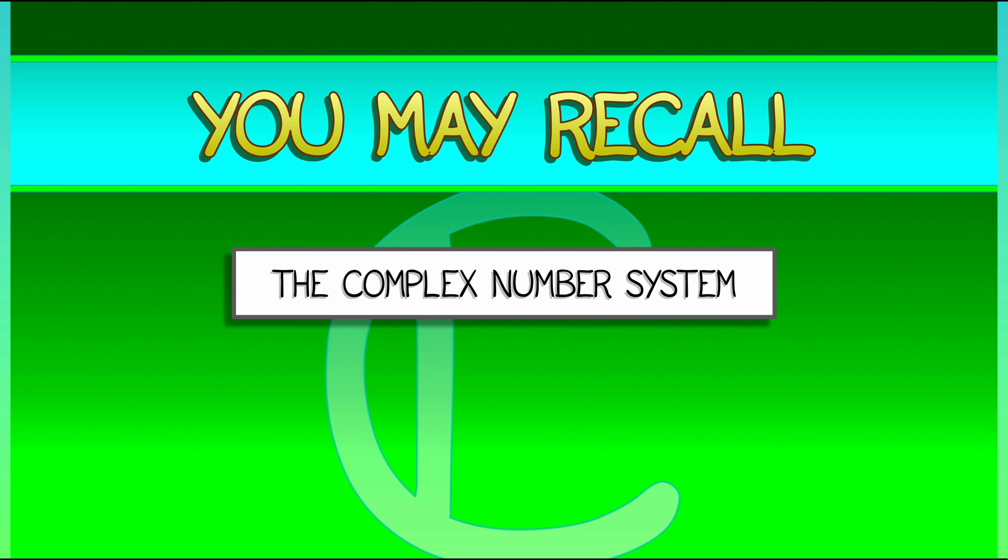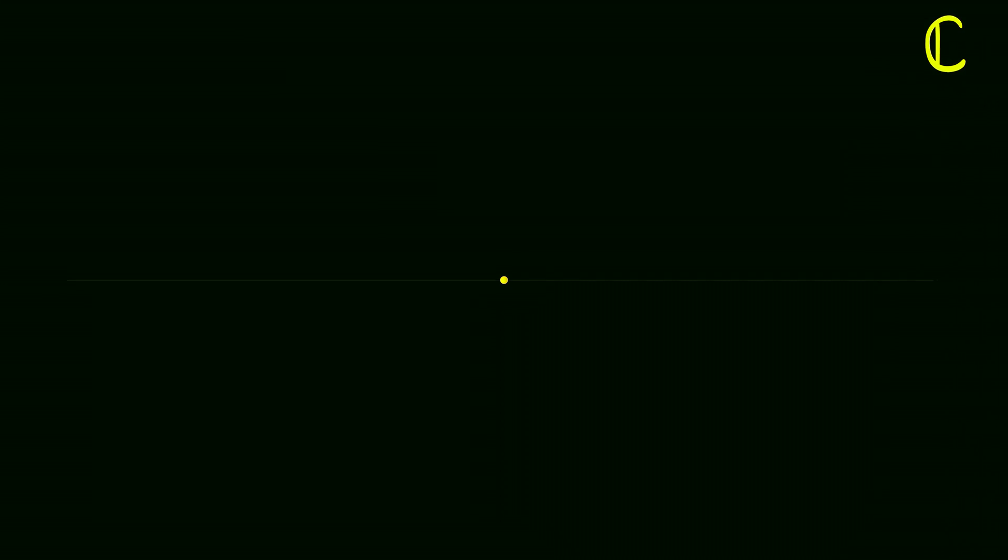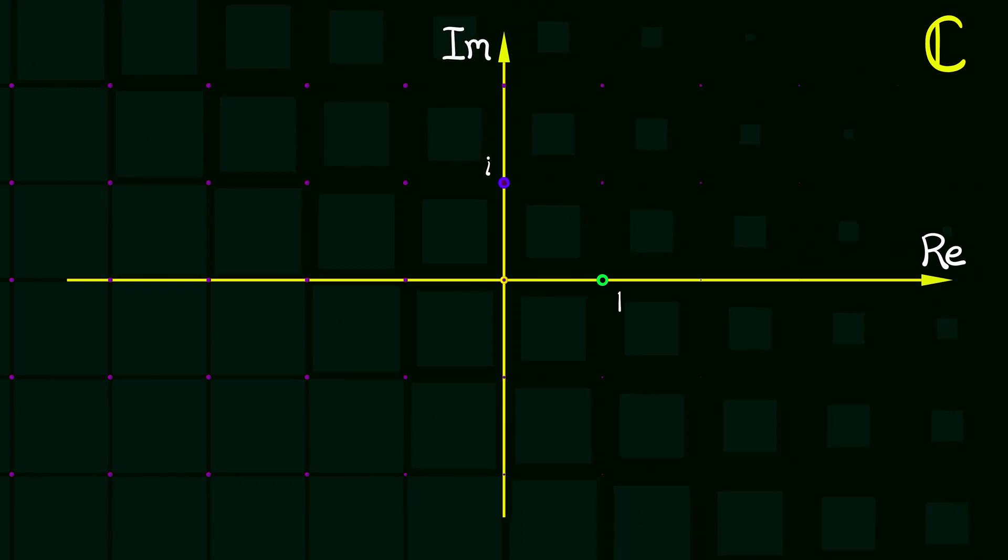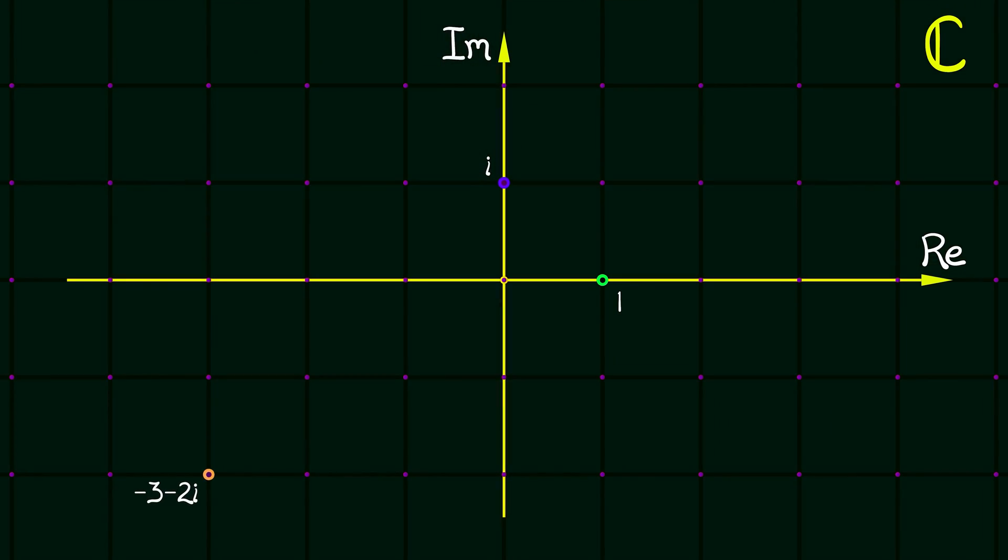These are numbers of the form a plus bi, where i is the square root of negative one, the imaginary unit. You can represent these numbers on the complex plane, where the horizontal axis is the real component and the vertical axis is the imaginary component.